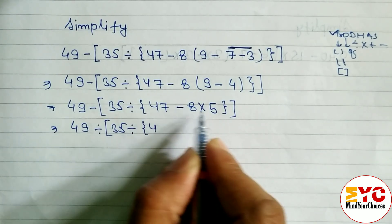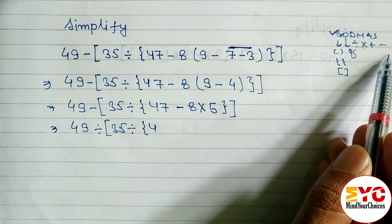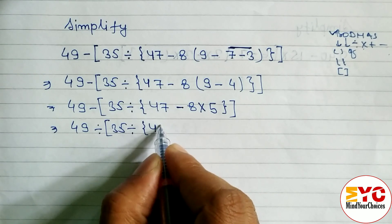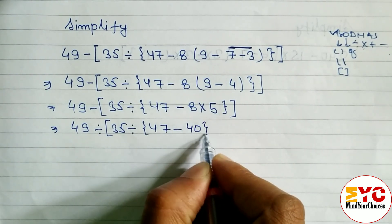After this, 49 divided by 35 divide, now we have to write 47. Here is minus, here is multiply. First one we have to do is multiply, then only subtraction. So multiply: 8 times 5 is 40, so we have to write 40 in curly bracket, then big bracket.